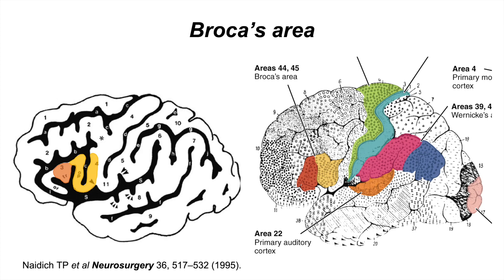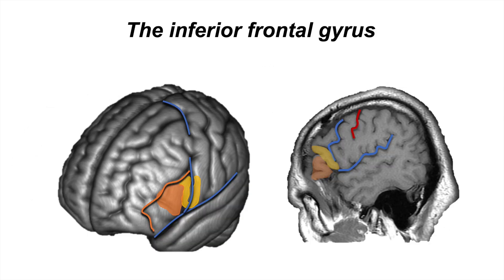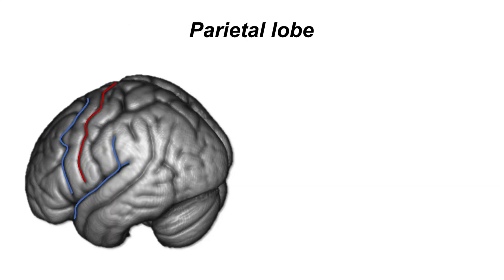Broca's area is considered one of the most crucial structures in a conventional language model, activating the motor system to produce spoken language. Taking advantage of the discussed anatomical knowledge, it is now possible to identify Broca's area on structural MRI. The inferior frontal sulcus and the precentral sulcus will be the primary guides to identify Broca's area.